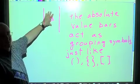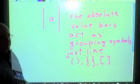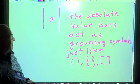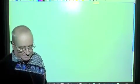That means whatever's inside of these absolute value bars, we're going to do first and get that value. And then we're going to go on and do the rest of it. They act just like grouping symbols.